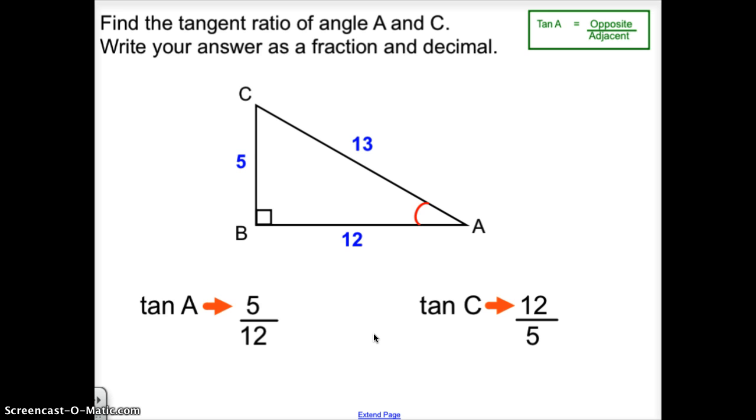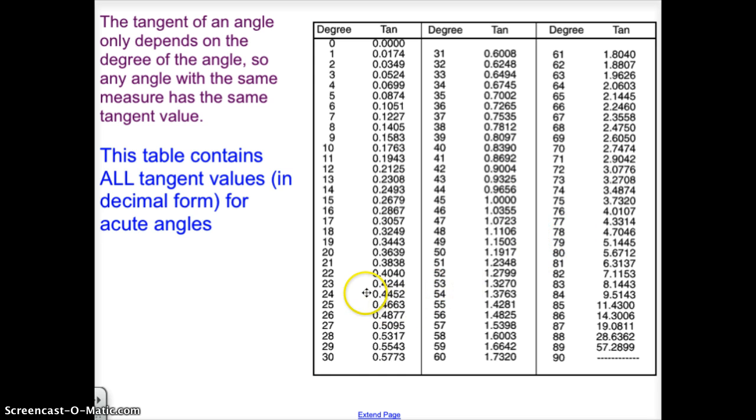The decimal version for 5/12, which would be the tangent of angle A, is 0.4166. If we go to the table, 0.4166 is closest to one of these two angles, 22 or 23 degrees.